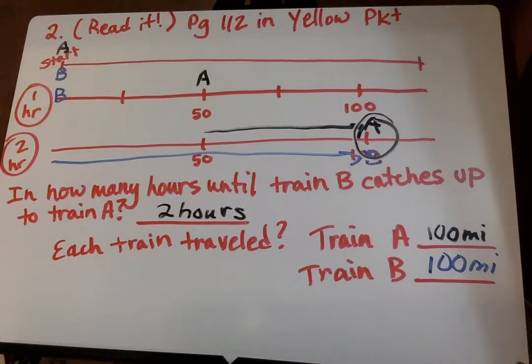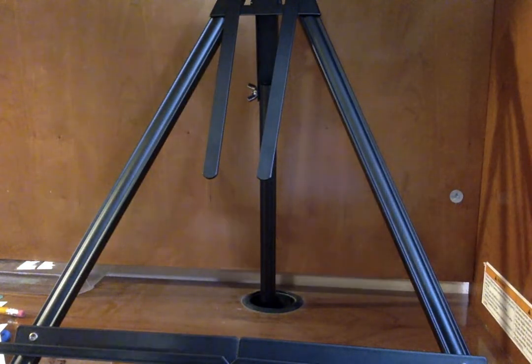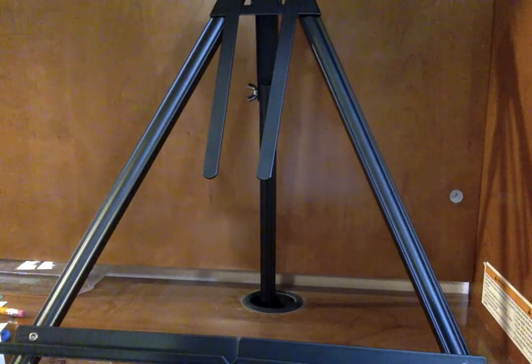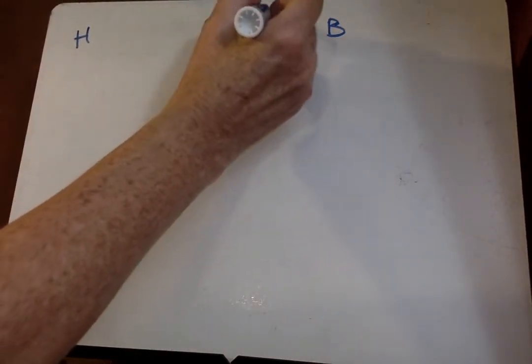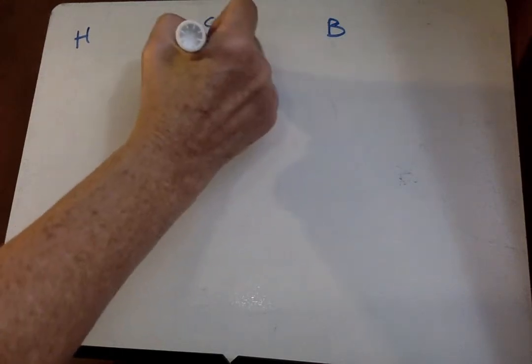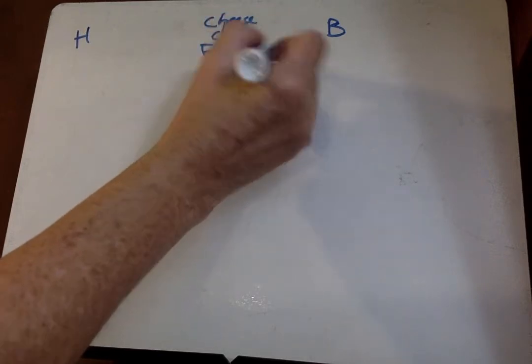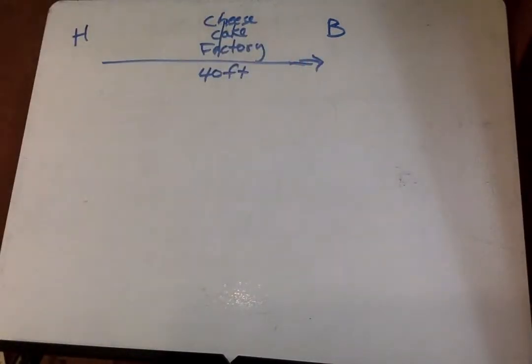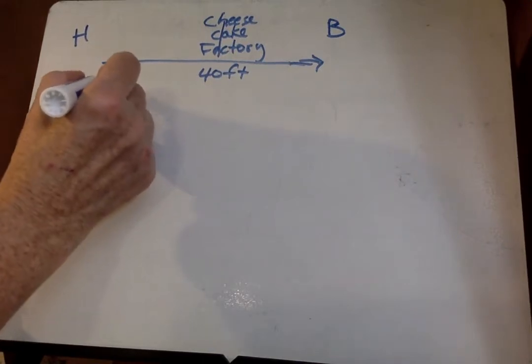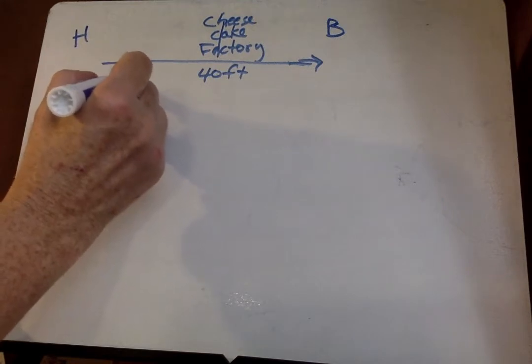I'm going to go ahead and help you set up number three. Howard sees Bernadette, and I don't quite have one ready for that. So I might have to write some stuff down. So right here, I'm going to put Howard is here. Bernadette is over here. Howard sees Bernadette 40 feet away on the other side of the Cheesecake Factory. So I'm going to put the Cheesecake Factory here. So this is 40 feet away. Starts walking towards her. So he's starting to walk.